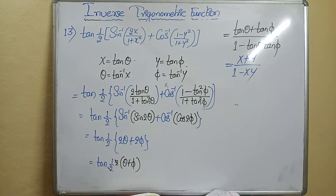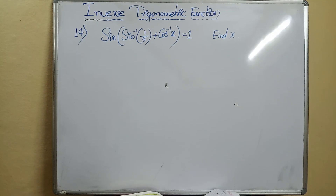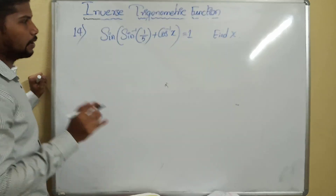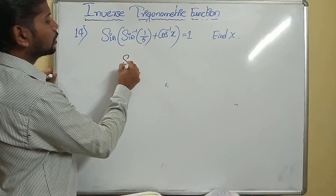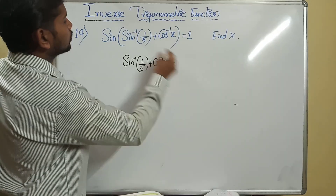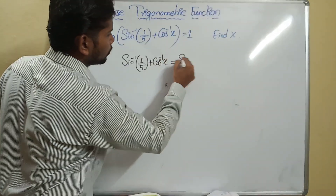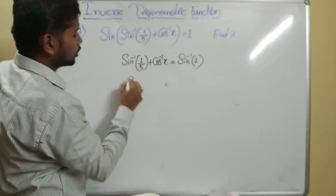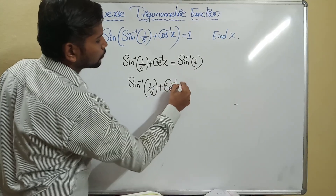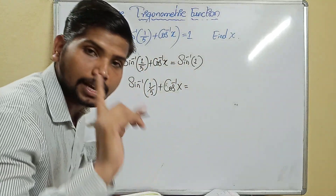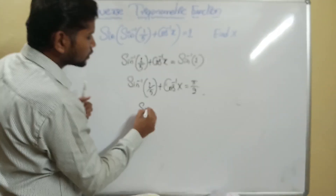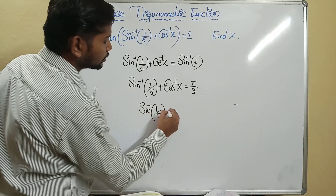Question 14: find the value of x. Inside the bracket, sine inverse of 1/5 plus cos inverse of x equals sine inverse of 1. Sine has the value 1 for which angle? For pi by 2. So sine inverse of 1/5 plus cos inverse of x equals pi by 2.